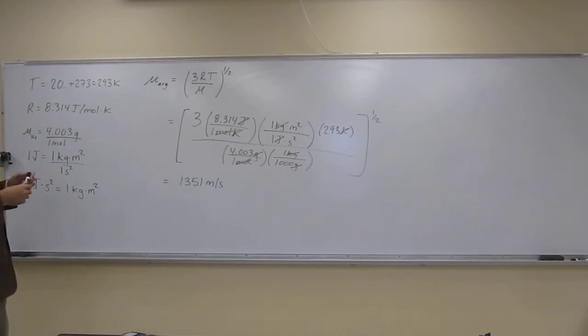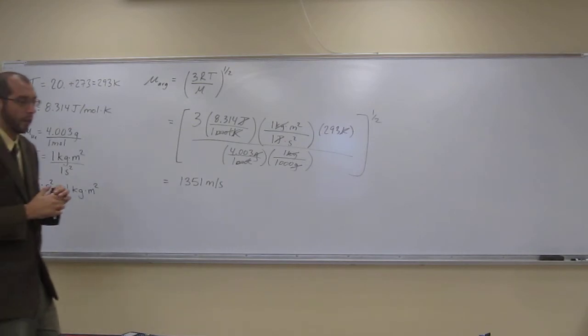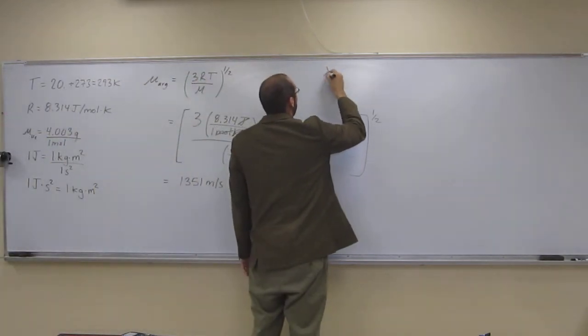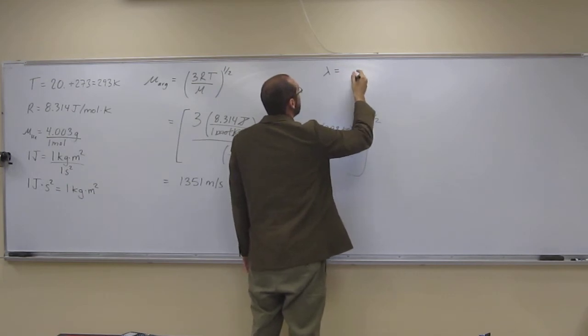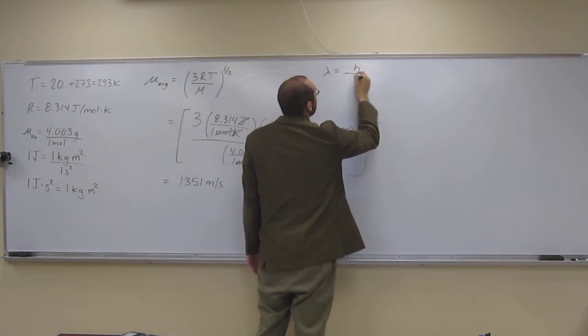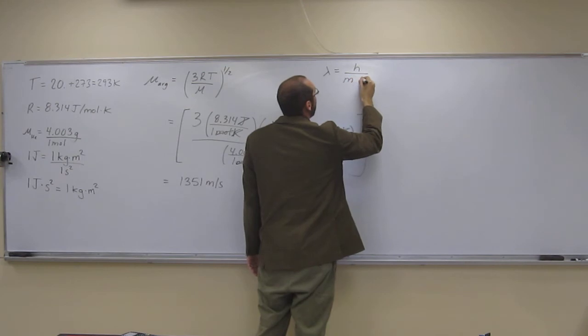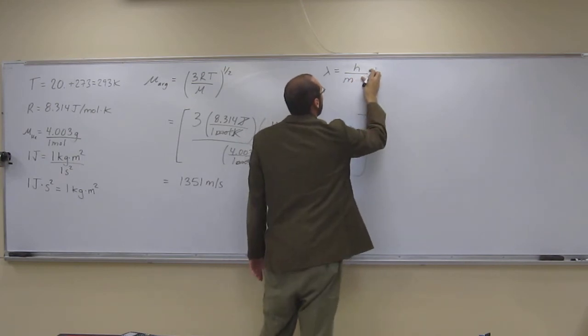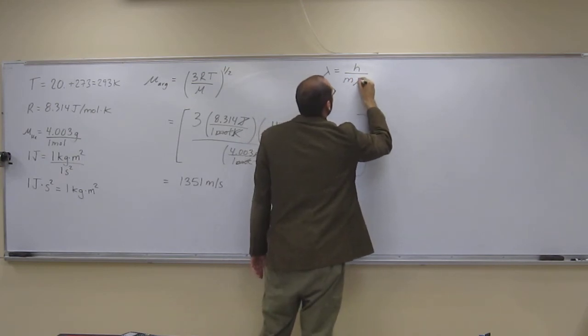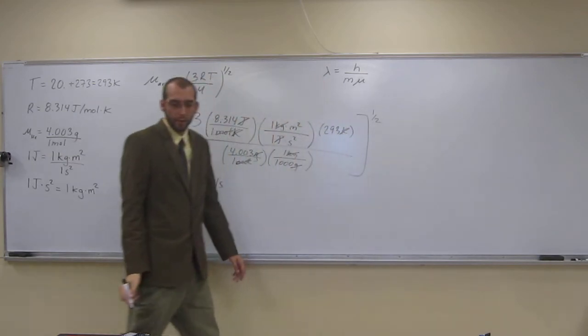So, now we have to use the de Broglie equation to figure out the wavelength from the information that we got. So, do you remember the de Broglie equation? No. Okay. So, it's lambda equals h over mv, like that.